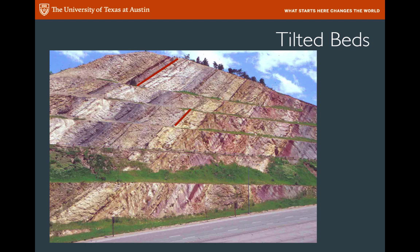The green planes that you can see here are in fact not geologic structures. Those were cut by the highway department to keep this whole thing from collapsing into the road, and those are plants that you see defining those green layers.